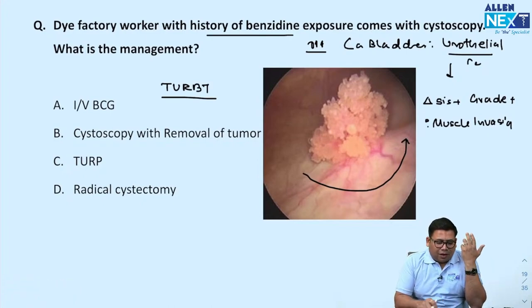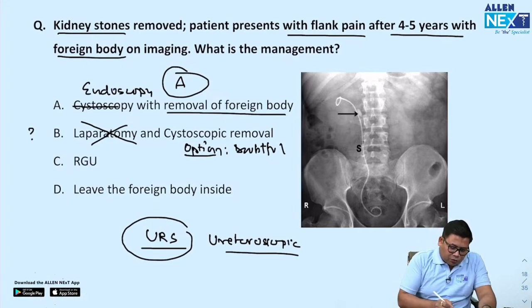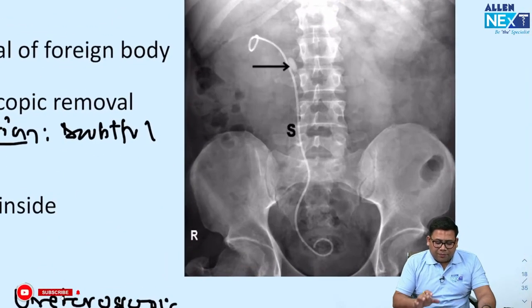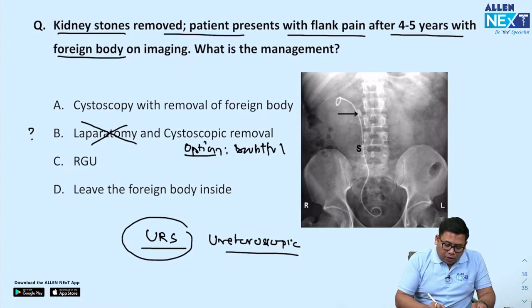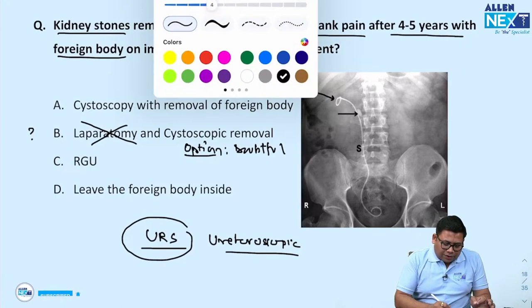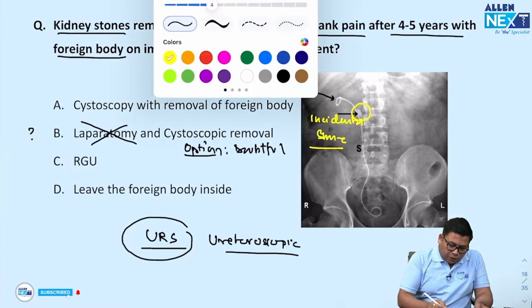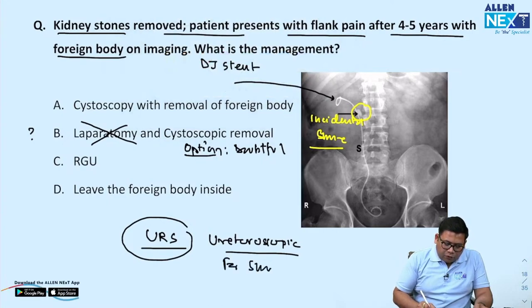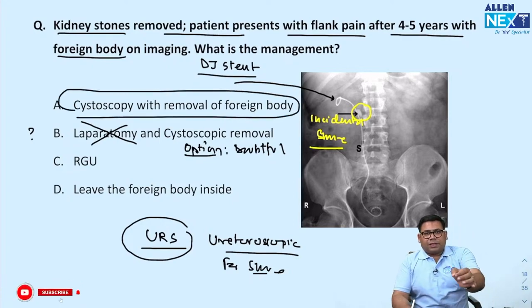If cystoscopy was mentioned in both options, note that the image showed a DJ stent — from a previous kidney stone procedure. If this was the image, it is an incidental stone with a retained DJ stent. For the stone, go for ureteroscopic removal. For the DJ stent, go for cystoscopy and removal. If doing URS, you would remove the stone and pull out the stent as well. Many patients do not return after PCNL to have their stent removed.